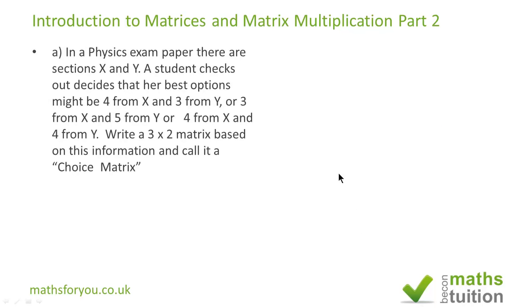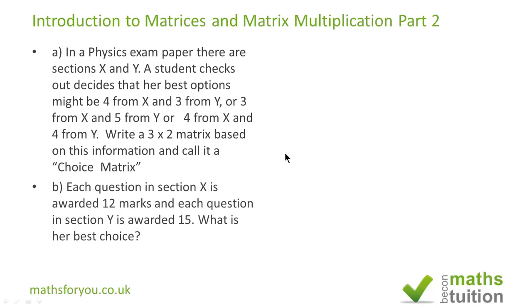Now here are the questions. There are two parts to this question. In part A, she checks out her exam paper and thinks she could get more marks either by doing 4 from X and 3 from Y, or she could do 3 from section X and 5 from section Y, or she could do 4 from X and 4 from Y. Your problem is to write a 3 by 2 matrix based on this information and call it a choice matrix.